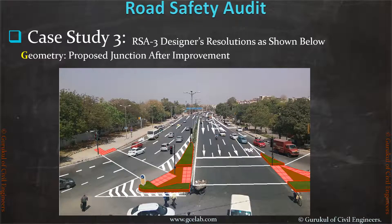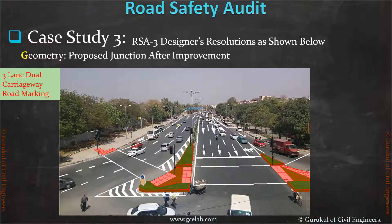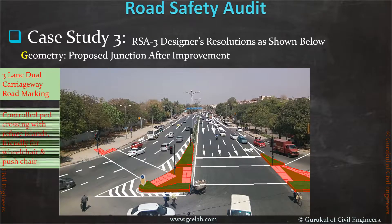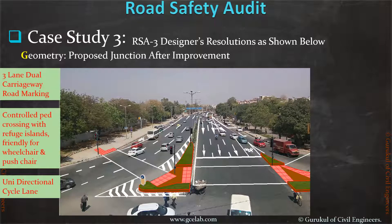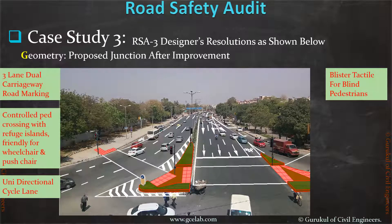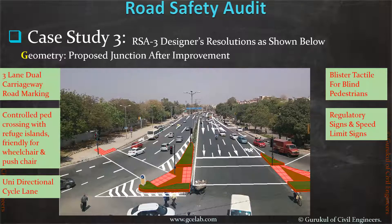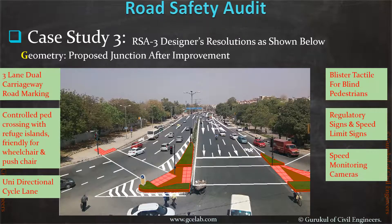The solution is to make this junction safer by providing the following: three-lane dual carriageway road markings, controlled pedestrian crossing with refuge islands friendly for wheelchair and pushchair users, unidirectional cycle lanes, Blister tactile paving for blind pedestrians, regulatory signs and speed limit signs, and speed monitoring cameras. By doing this, we can change a completely unsafe junction into a safe junction.